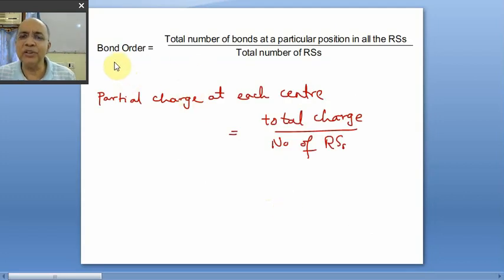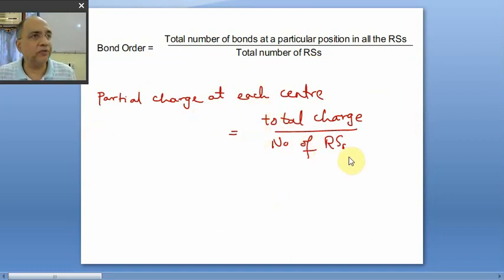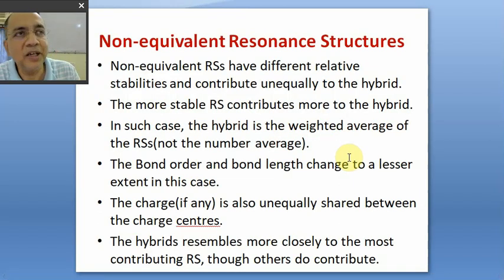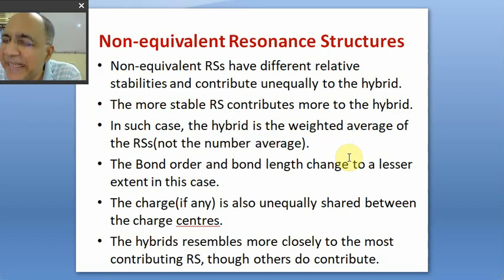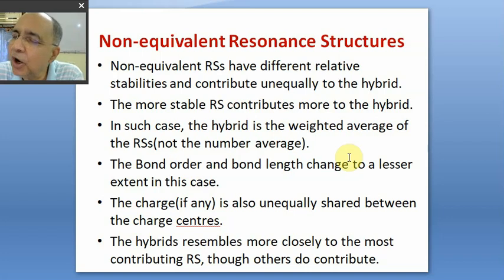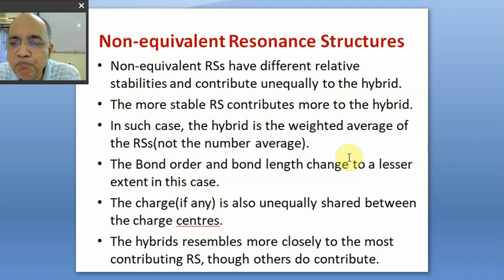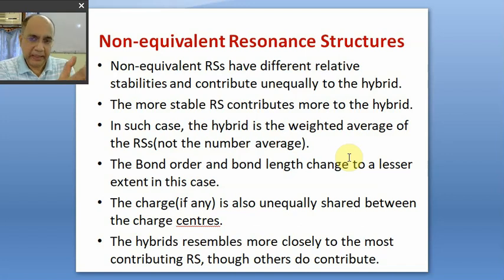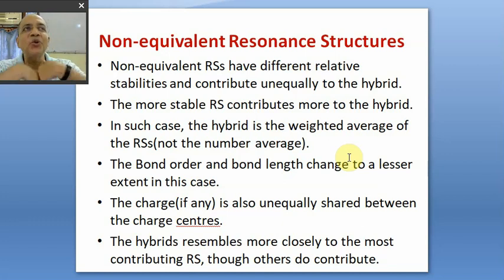For equivalent RSS, the bond order is the number average: total bonds at a position divided by the total number of resonance structures. Partial charge at each charge center equals total charge divided by the number of RSS. Our focus now is on non-equivalent resonance structures, which are abundant in organic chemistry. The case of equivalent RSS is very rare, but non-equivalent RSS is replete. Let us learn the 10 basic rules.